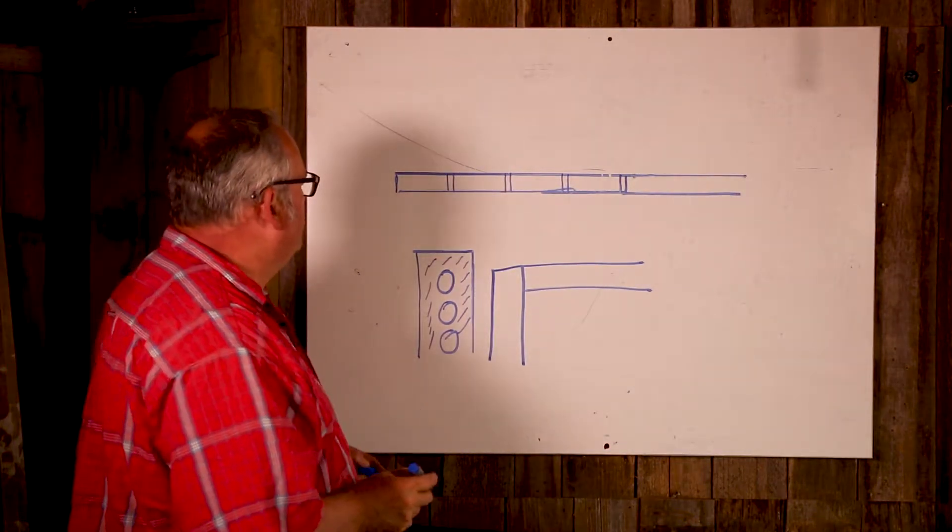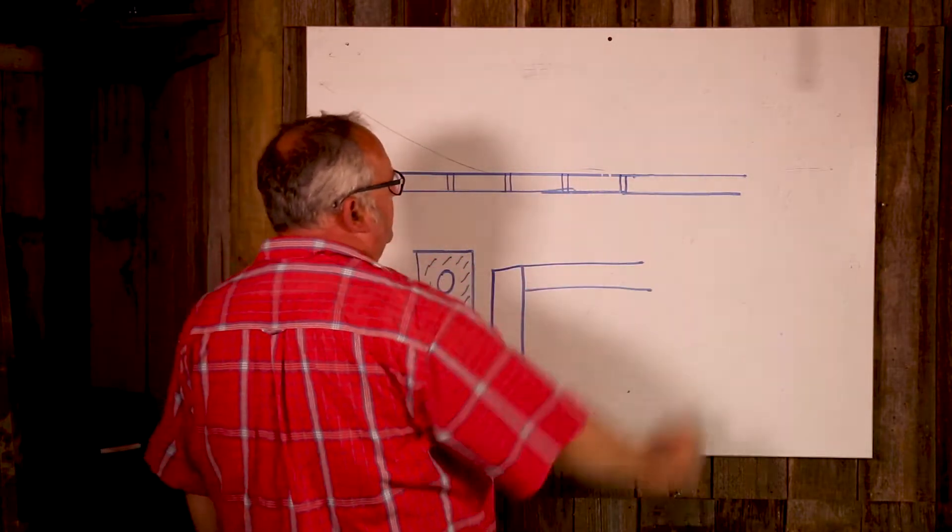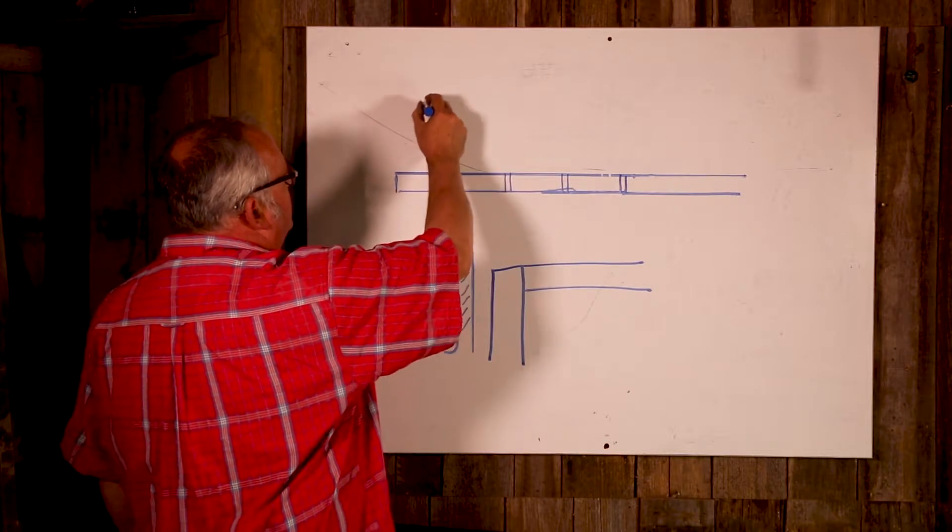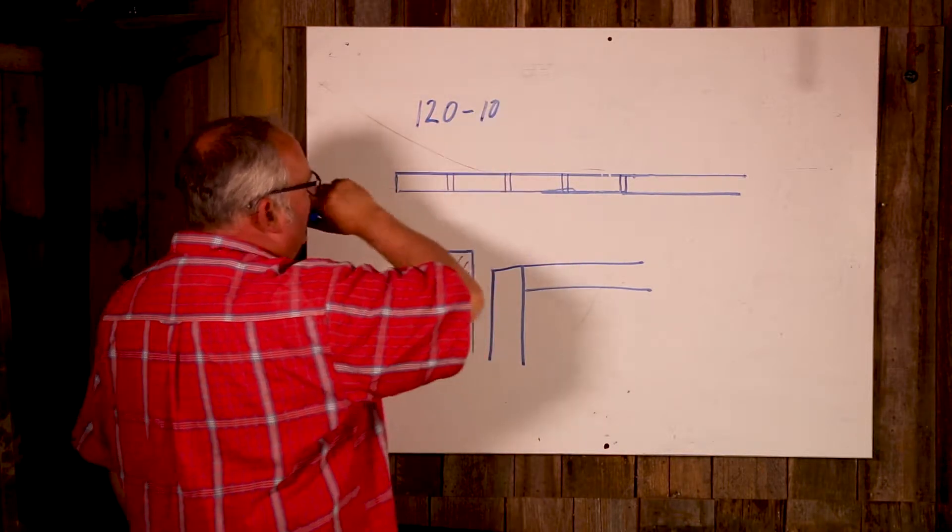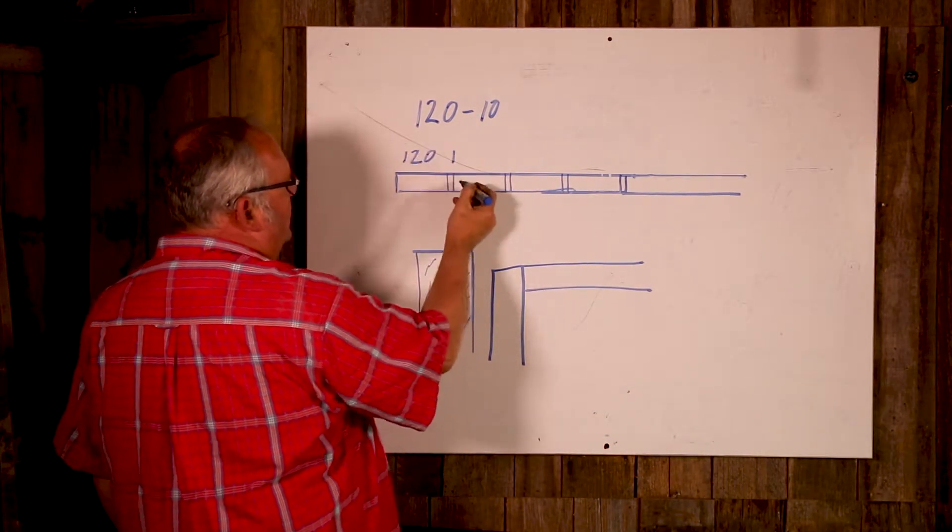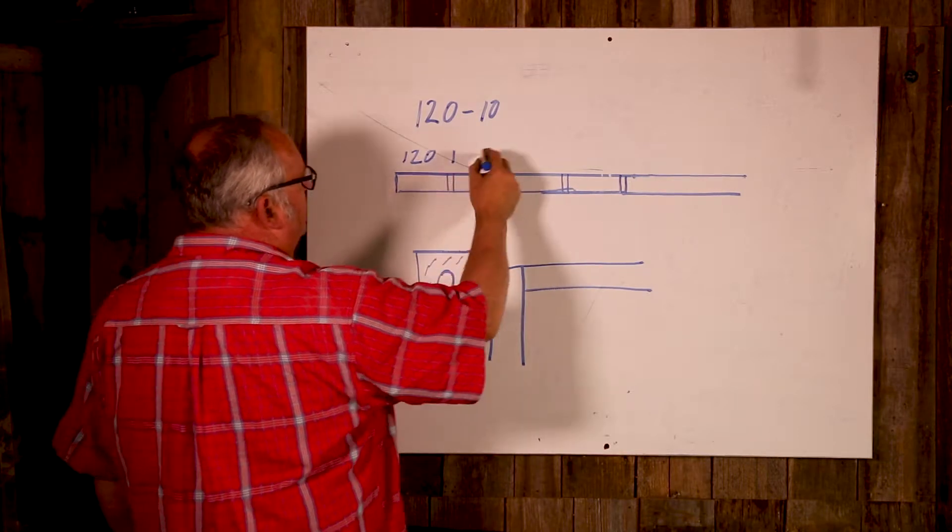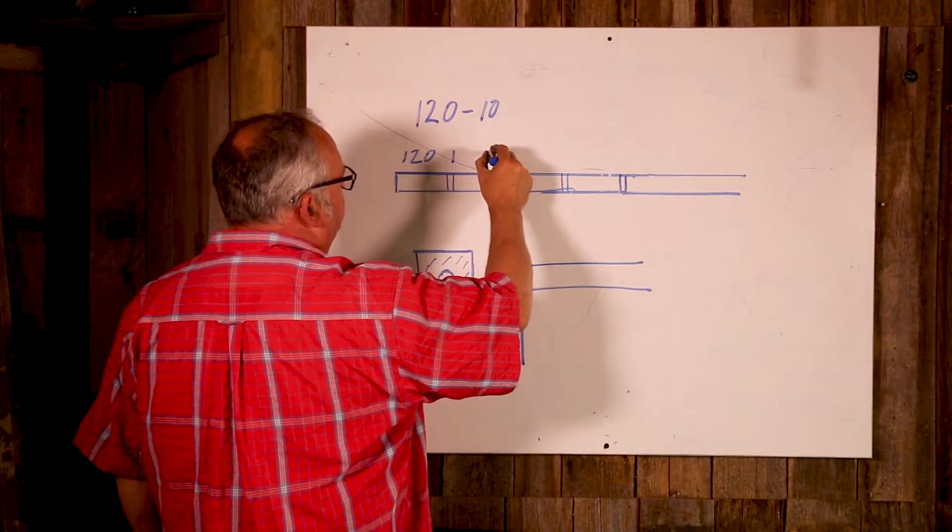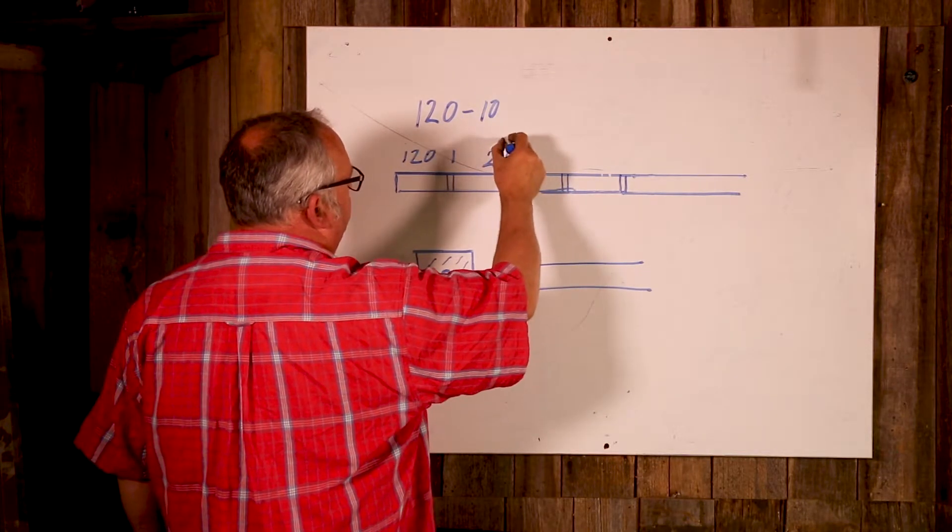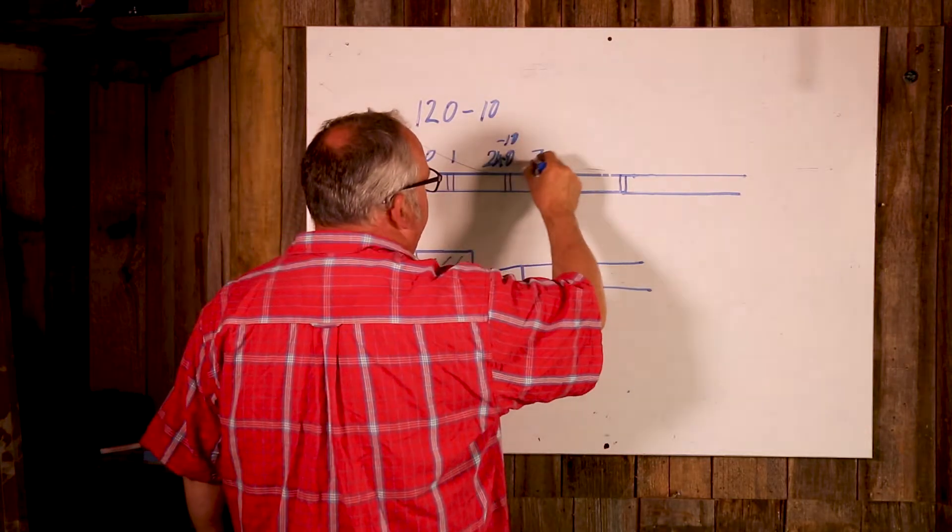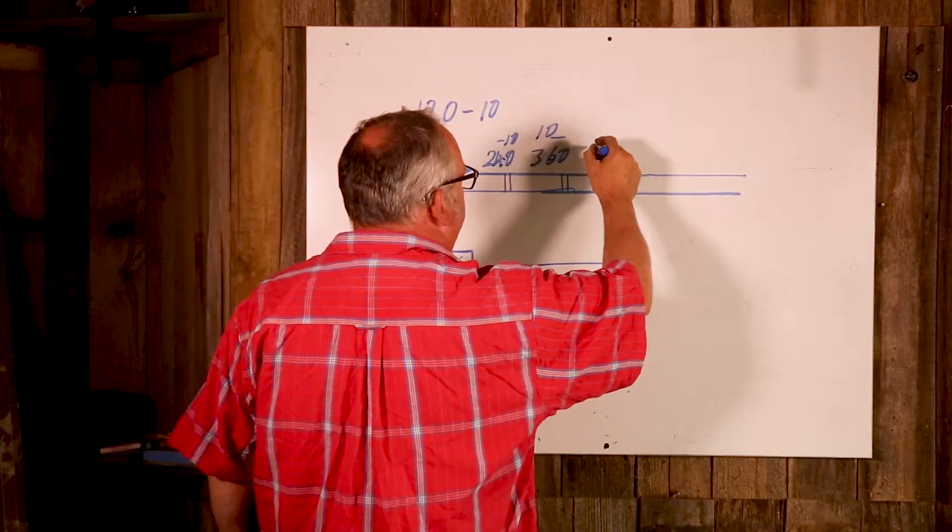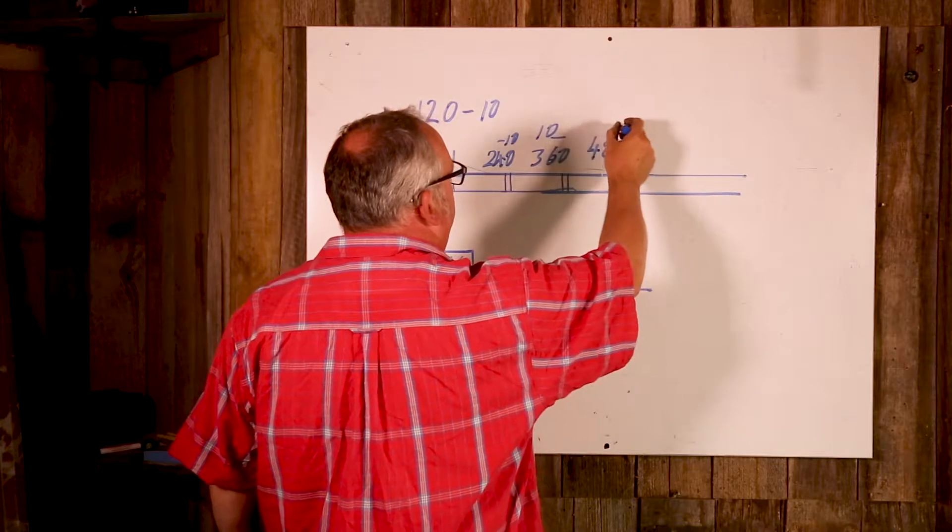So first thing I do is make a brick stick. I get a little piece of timber and come along multiples of 120 minus 10. What that means is I come along 120 and then come back 10, 240 and back 10, 360 and back 10, 480 and back 10.